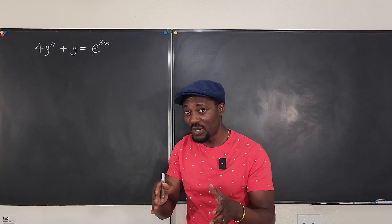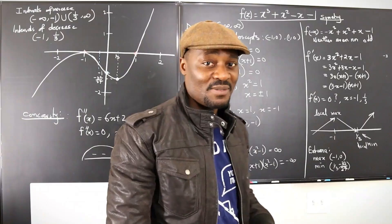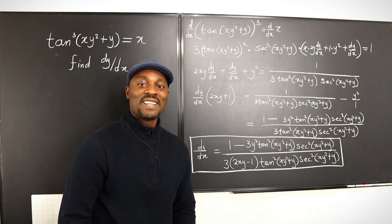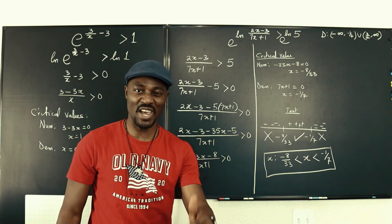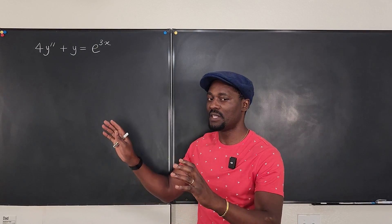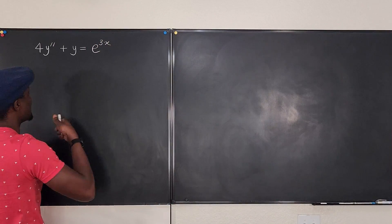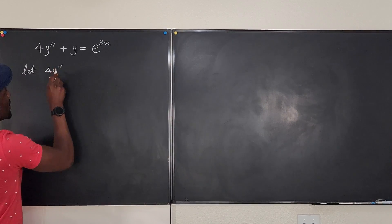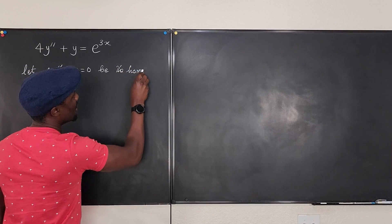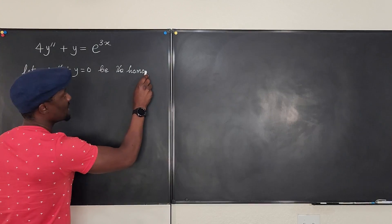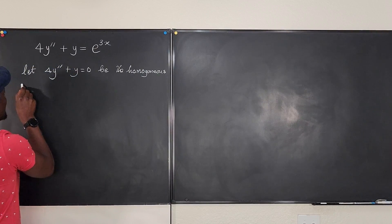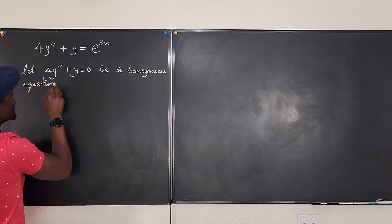The first thing we're going to do is get our homogeneous equation out of this. We're going to ignore the right-hand side and say: let 4y'' + y = 0 be the homogeneous equation. That's what we're going to solve, just like we did before.